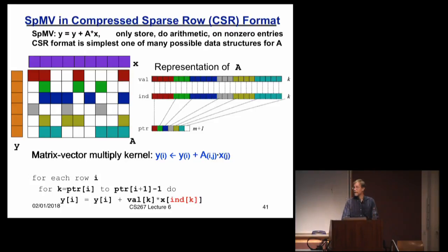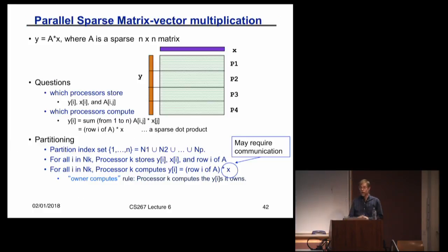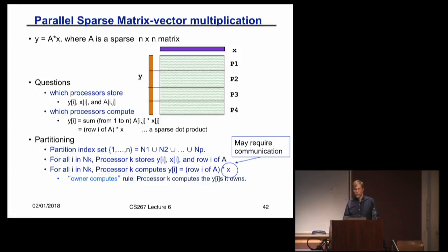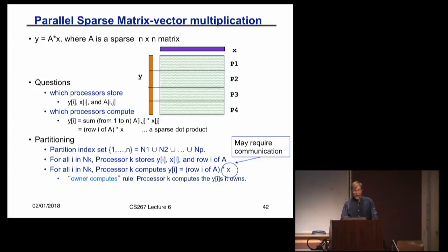So let's talk about how to parallelize this. What's the simplest thing you could imagine doing? Suppose I had four processors — I'll take my sparse matrix and give the first processor the first quarter of the rows, the second processor the next quarter, and so on. It would be natural to say each processor owns one quarter of the entries of y and one quarter of x. But is that always going to be a good idea? What if there are not very many non-zeros up in one region and lots and lots down in another? This will be a load balance problem.